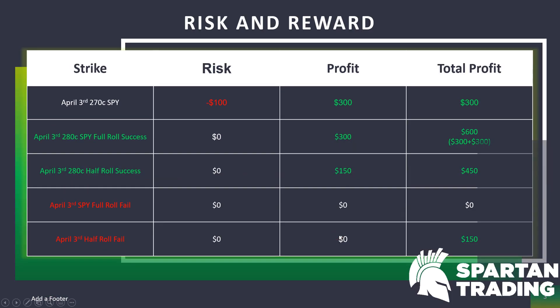Let's talk about this from a more visual standpoint. Original position: April 3rd, 270 calls. I typically like to go for a 3-to-1 risk-reward ratio — if you're going to risk $100, try to make $300. So in this case, April 3rd 270 call: risk $100, profit $300 if it works. So your risk is $100, your profit is $300, and total profit on this position is $300.